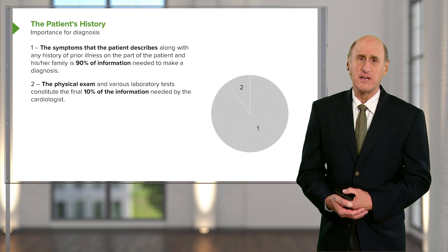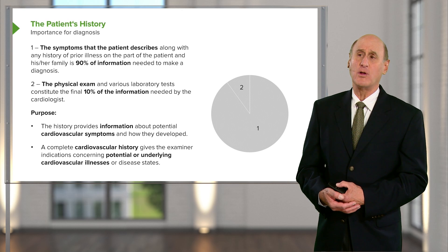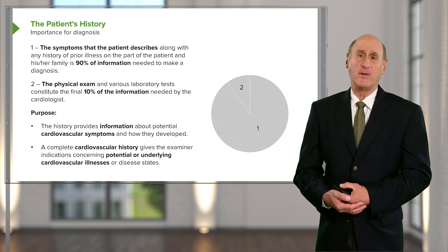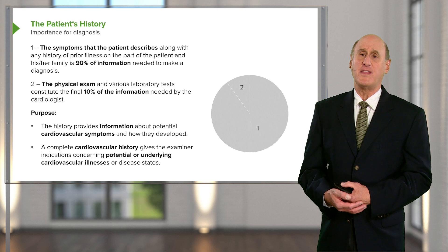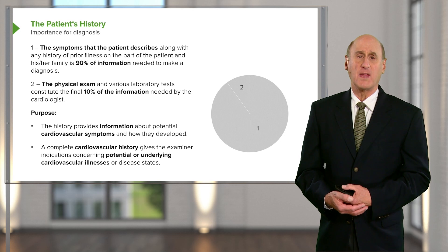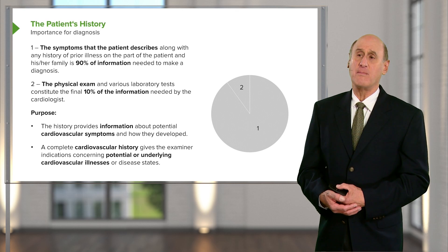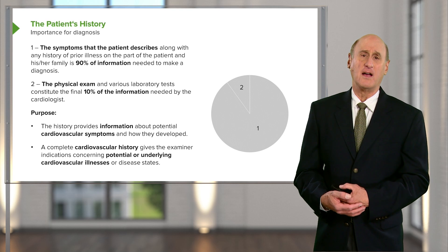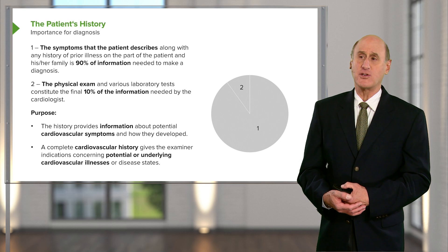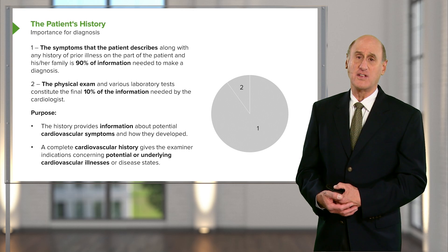The patient will tell us some complaint which will point us in the direction of which disease they might have. For example, if the patient talks about chest discomfort, then we are thinking about atherosclerotic disease — or hardening of the arteries, as it's termed in lay language — with restriction of blood flow into the heart muscle. If they're complaining about shortness of breath and swelling of the ankles, we are thinking about heart failure, in which the heart is not pumping efficiently enough. We will also ask the patient questions about lifestyle issues to understand what heart disease they're at risk for.